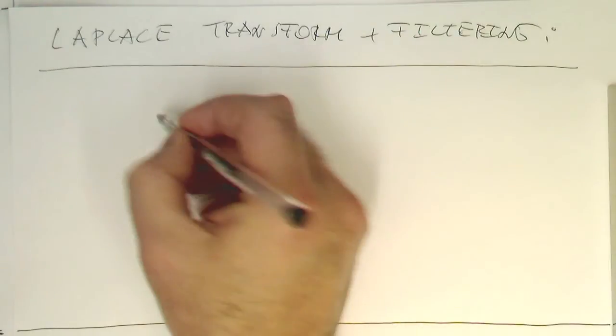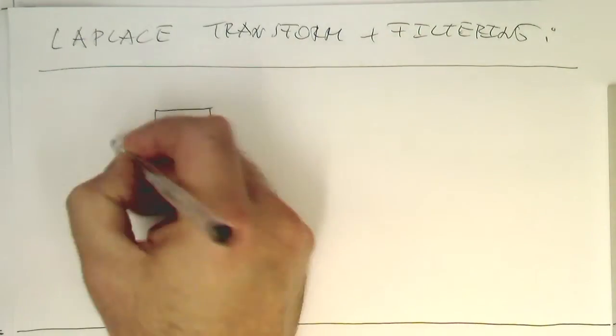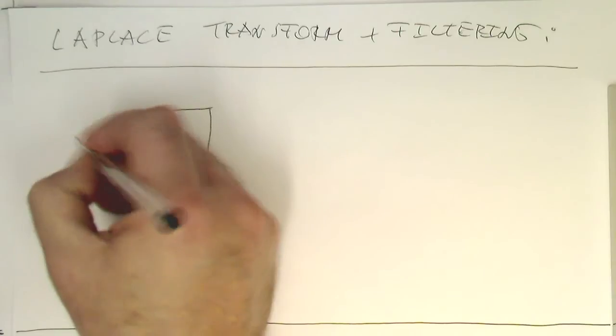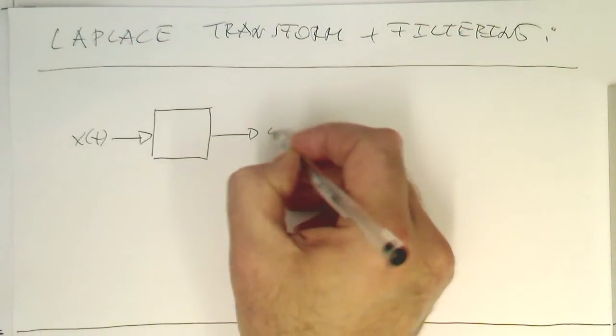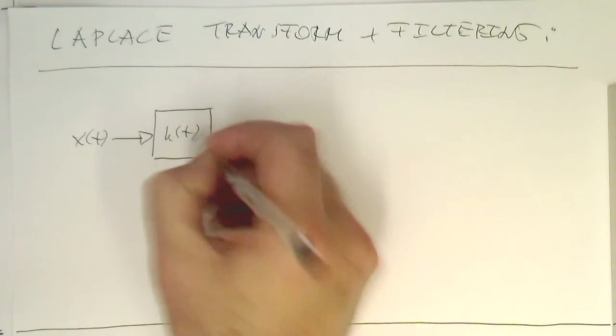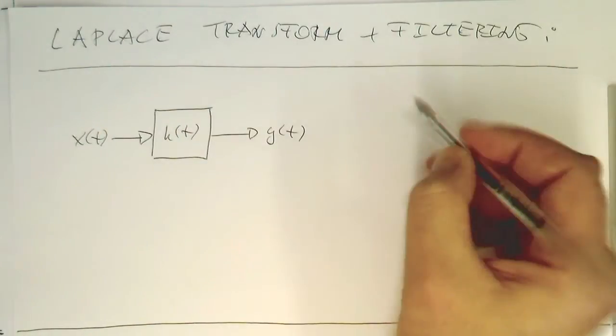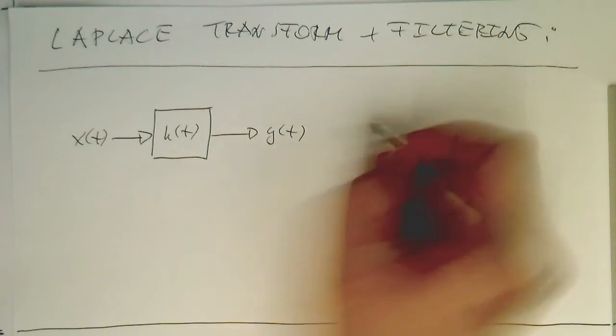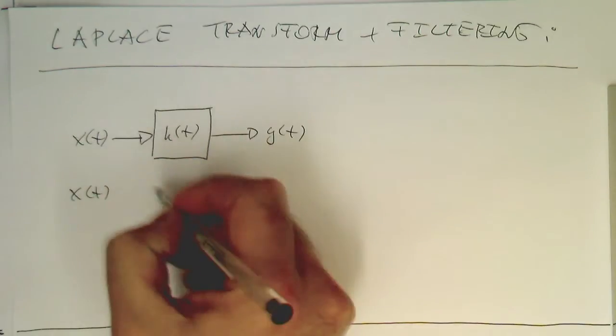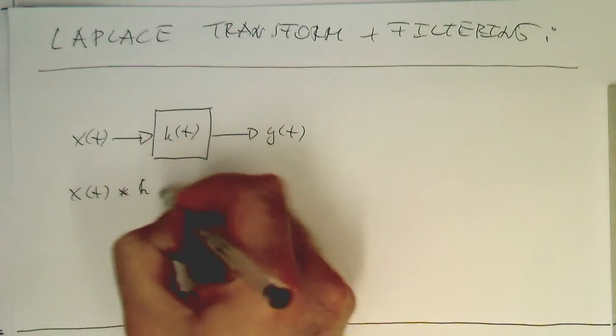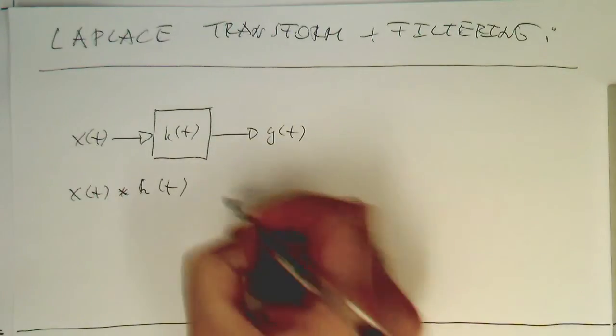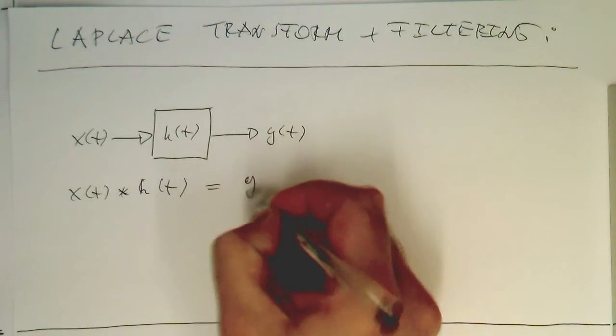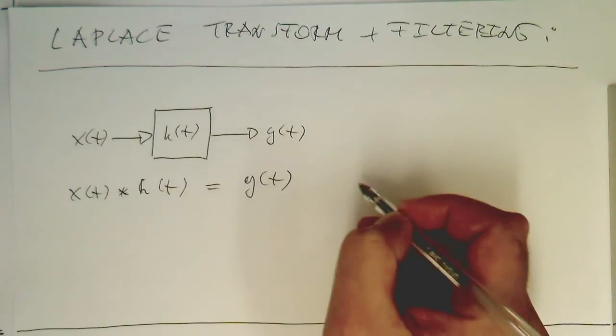Remember our analog filter. We've got an X of t, an input signal, and we've got an output signal, and we've got our impulse response H of t here. Now we know that the Laplace transform is quite convenient here, because if we have our input signal X of t, this is convolved by H of t, and then this gives us our Y of t. It's our convolution operation.